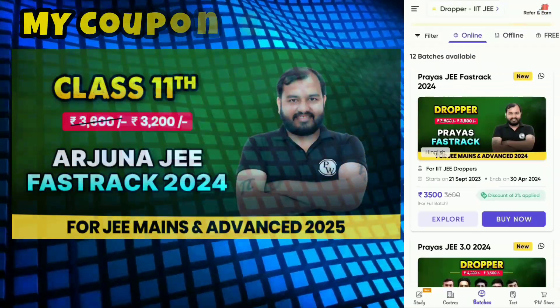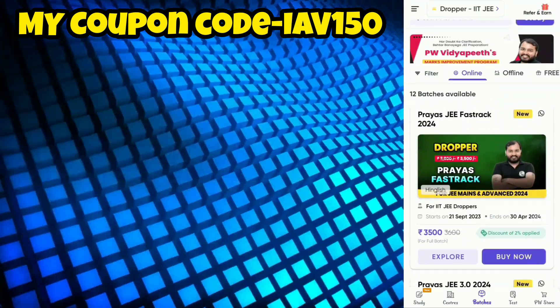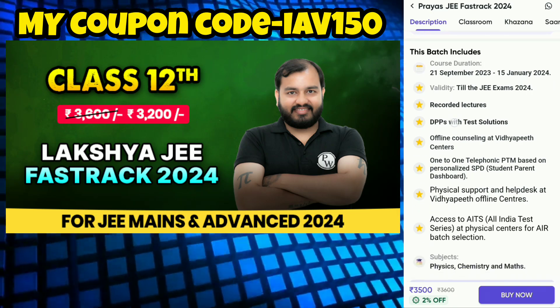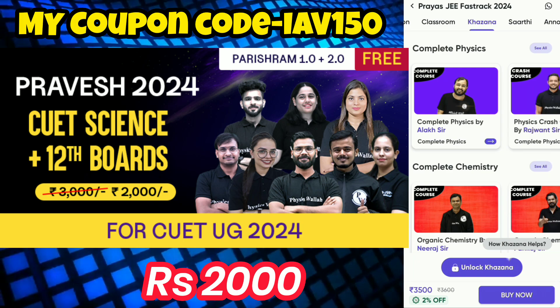So hi guys, how are you all? If you have a lot of people starting Jai's preparation for this time, for this, PW has your top quality fast track batches. For 11th class, there is Arjuna Jai Fast Track at only Rs.3,200 and classes have started from 18th September. Then for class 12, there is Lakshay Jai Fast Track at only Rs.3,200 and classes have started from 18th September. For dropper students, Priyas Jai Fast Track batch is available at only Rs.3,500 and classes have started from 21st September. Also, the Pravesh Sainz 2024 batch is available for class 12th only at Rs.2,000 and classes will start from 16th October.